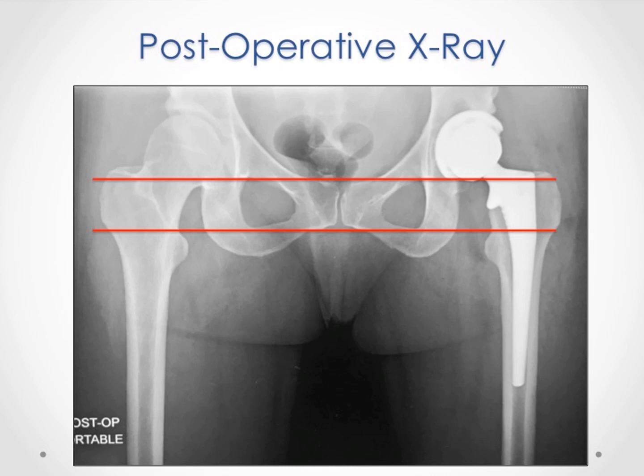This means that the leg lengths are equal and we are satisfied with our reconstruction. I know that was a lot of material, but some of you have requested to understand the specific way we do it, and so we put this out for you. It's enough for the rest of you to know that we will correct your offset and leg length. Thank you.